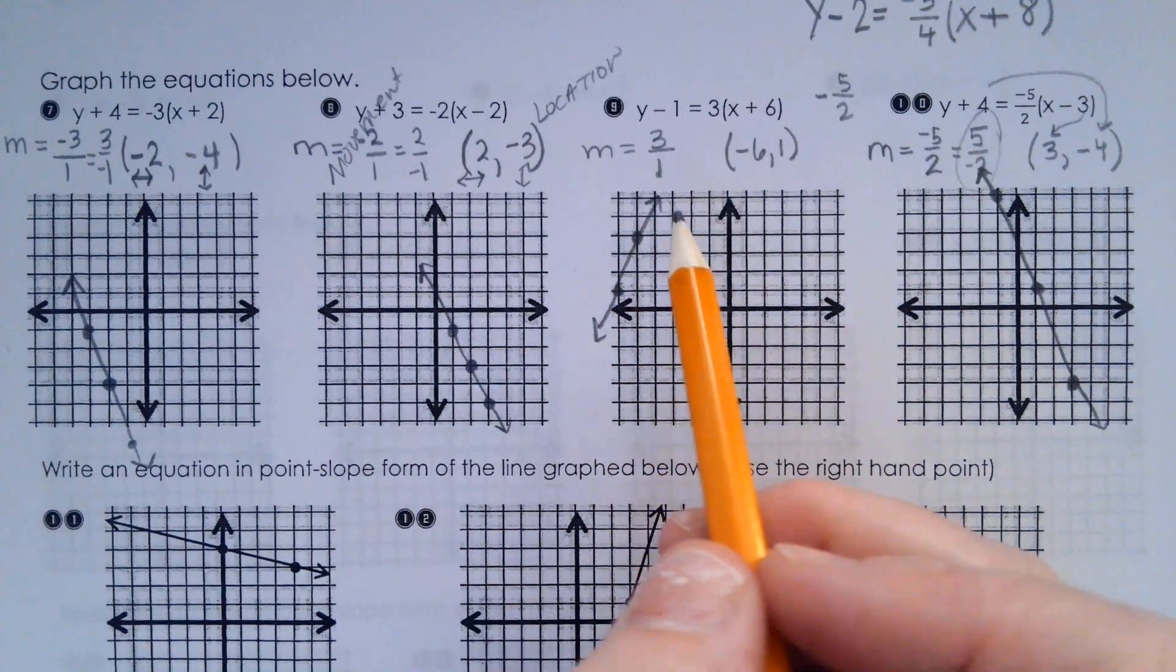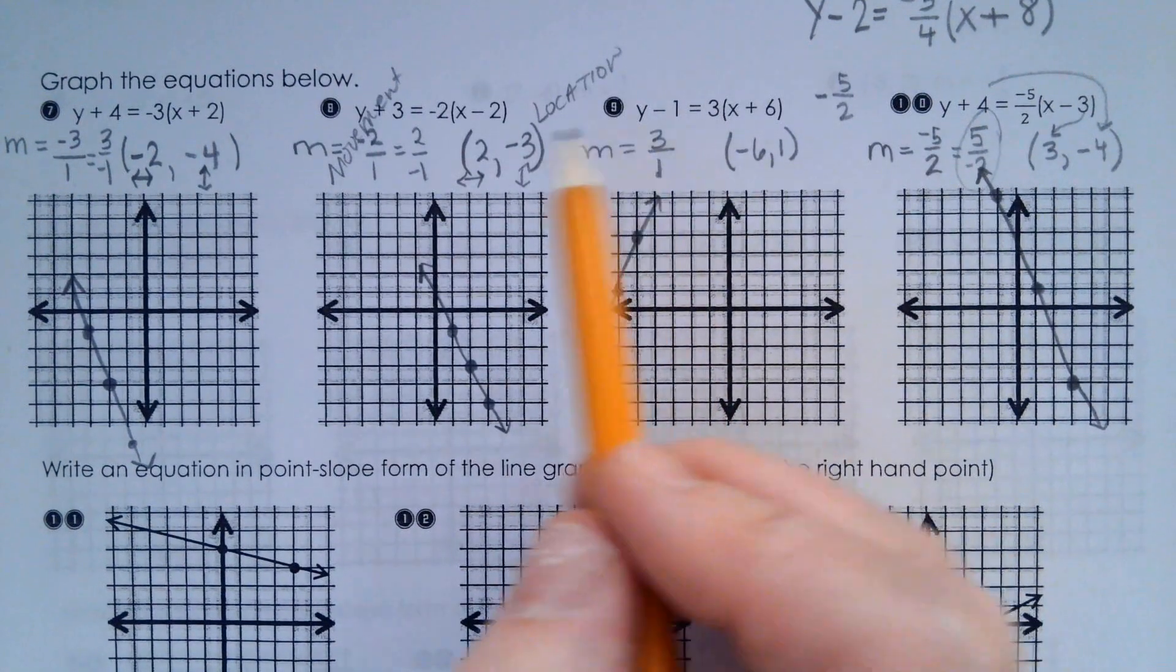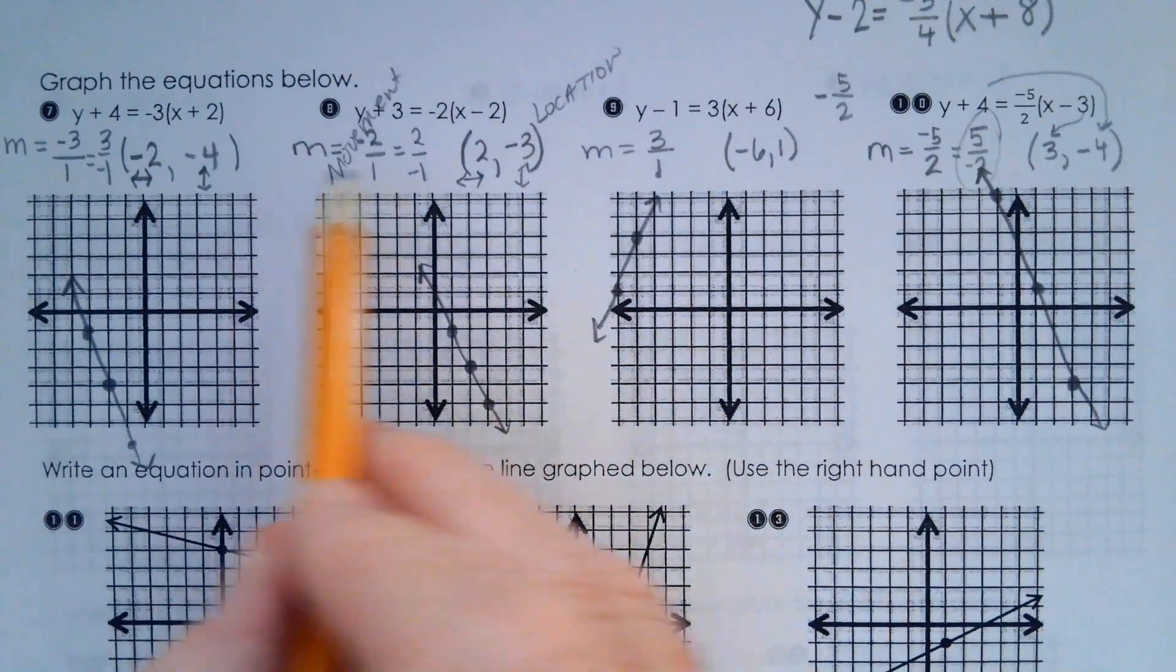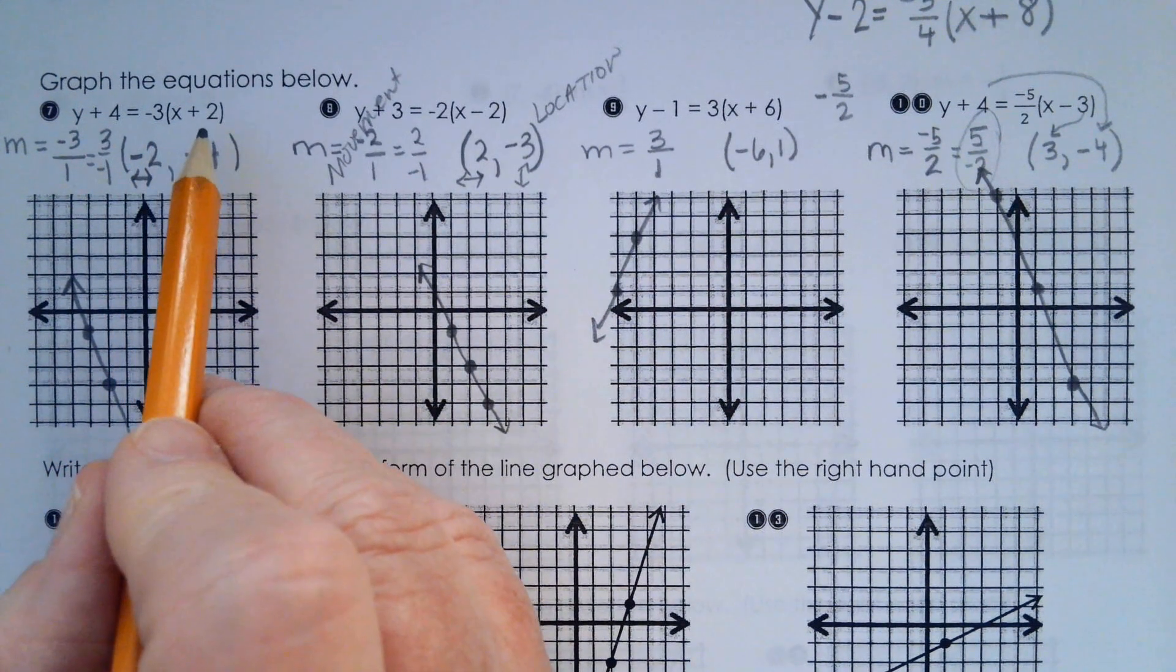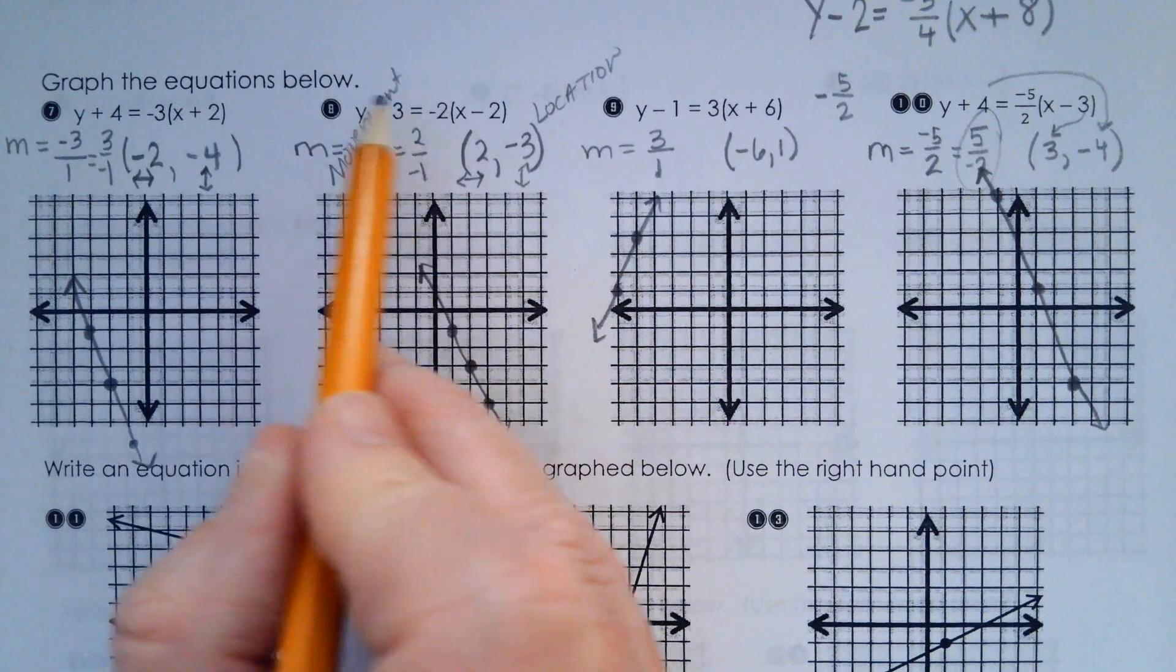So let's recap. Where do you find the slope in each one of these? The one in front of the parenthesis.